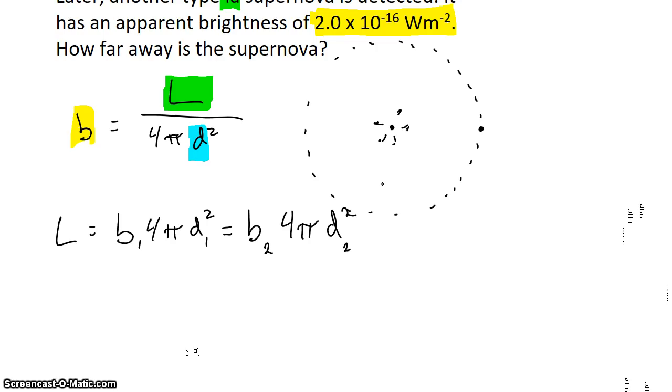And so what that's going to allow us to do is to take this relationship, this equation, and solve it for the distance to the second supernova. We can do that first by eliminating 4π, which shows up on both sides of the equation. And then we're going to try and solve for d₂.